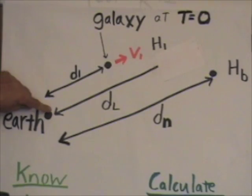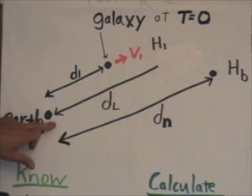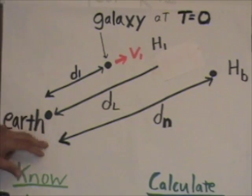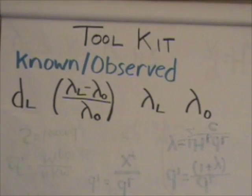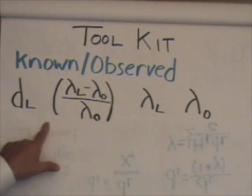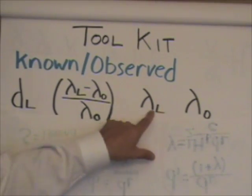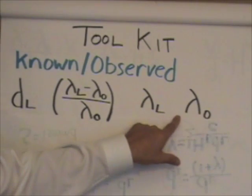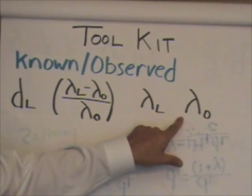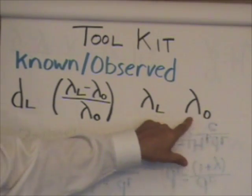We also know the wavelength of that light when it's observed on Earth, and the observed redshift of that light from the redshift that would have been expected from light emitted from a similar source if there was no redshift. So the things that are known are the distance light traveled, the observed redshift, the wavelength of the light observed, and the initial wavelength that the light emitted from such an object would have had if there had been no redshift.